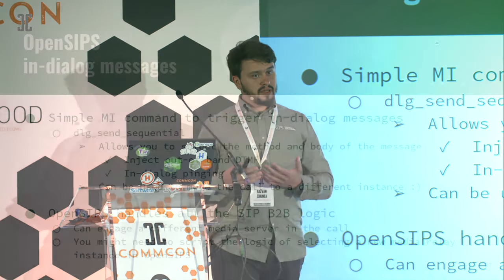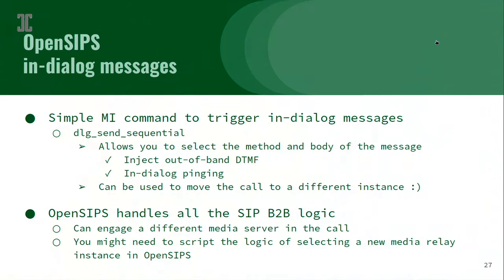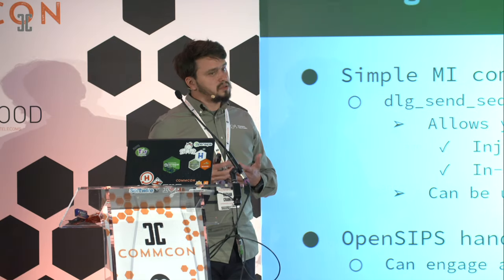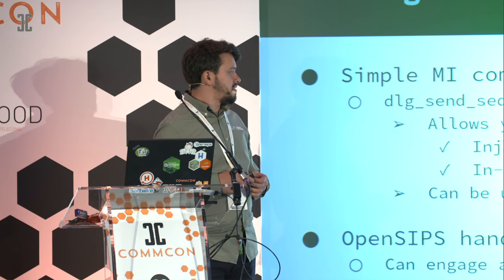In this scheme, Alice will go through the same OpenSIPS proxy for signaling, the call is still established, but the media will go on different paths. The call is working as expected with more or less no downtime — it only depends on how soon you manage to figure out that your RTP proxy or engine is down. To do that, we developed a new MI function in OpenSIPS that is able to trigger in-dialogue messages.